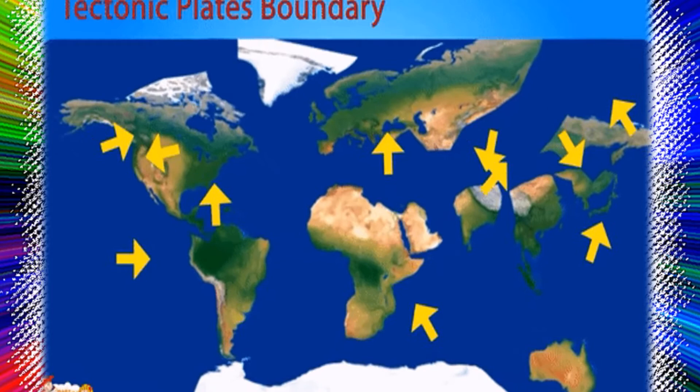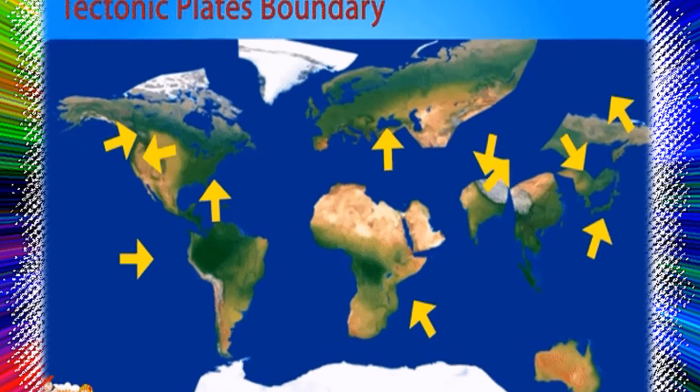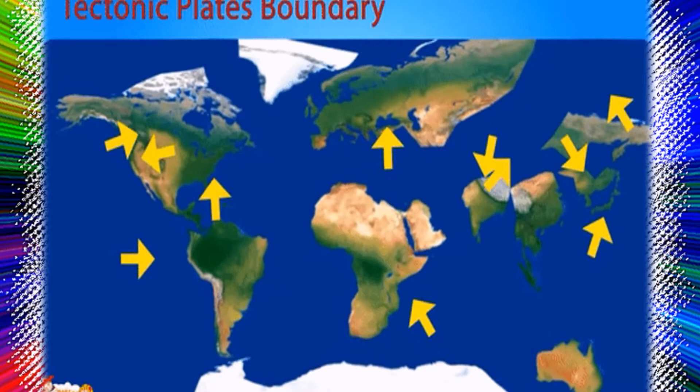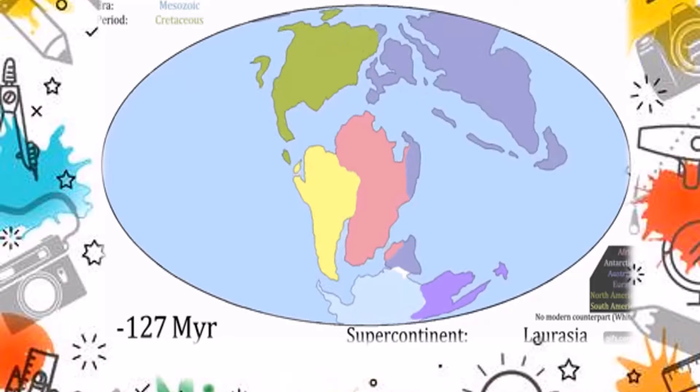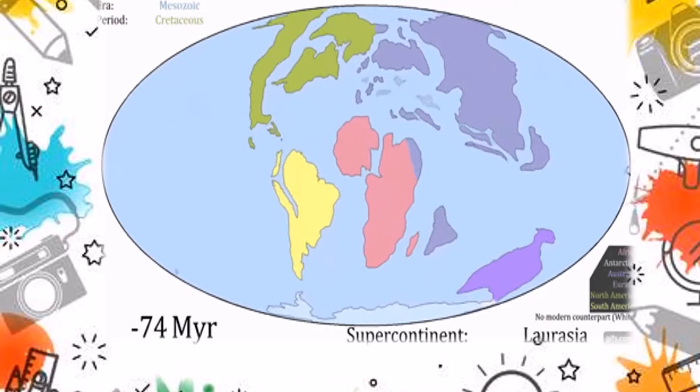In much the same way that geographic borders have separated, collided, and been redrawn throughout human history, tectonic plate boundaries have diverged, converged, and reshaped the Earth throughout its geologic history. Today, science has shown that the surface of the Earth is in a constant state of change. We are able to observe and measure mountains rising and eroding, oceans expanding and shrinking, volcanoes erupting and earthquakes striking.